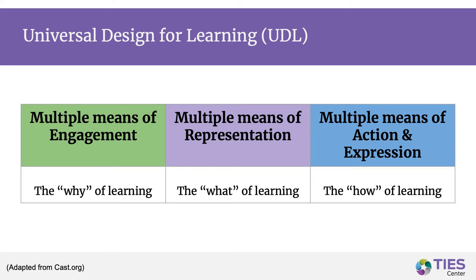Universal Design for Learning is a framework that can be used to support educators as they include students with significant cognitive disabilities in the creation and teaching of expectations. Teams can do this by checking to make sure that the expectations and lessons have the components to increase accessibility for all, as outlined in this table. First, multiple means of engagement — the why of learning. Second, multiple means of representation — the what of learning. And lastly, multiple means of action and expression — the how of learning.